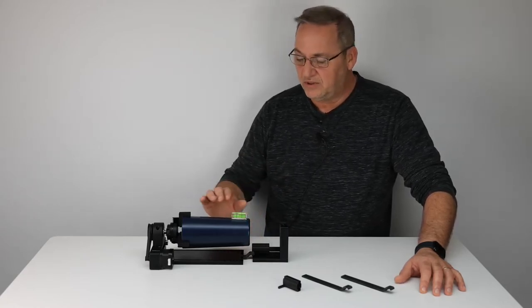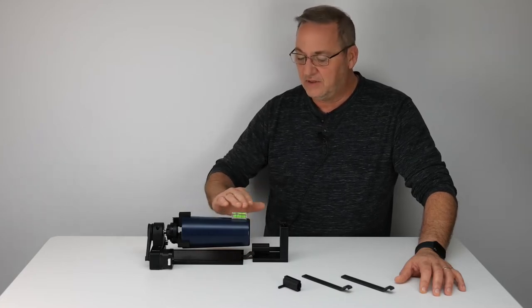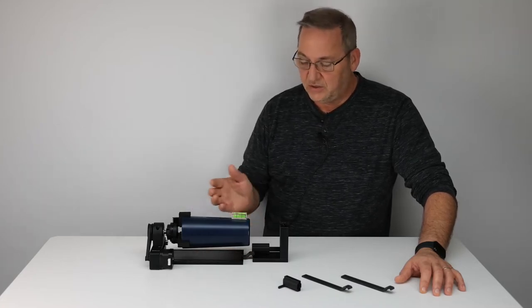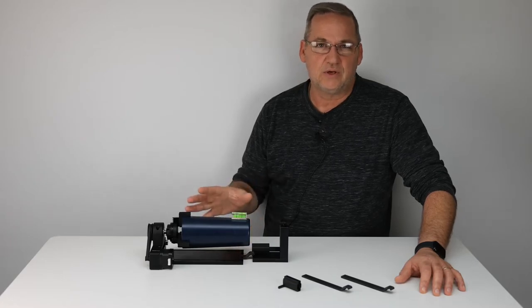When you're doing tumblers that are tapered, you need to have a level surface, which means you're going to have to raise your rotary tool.